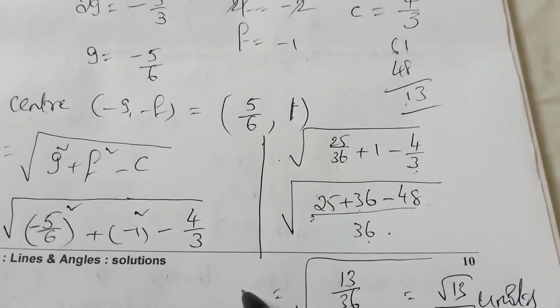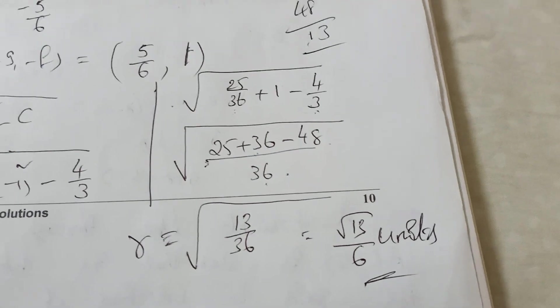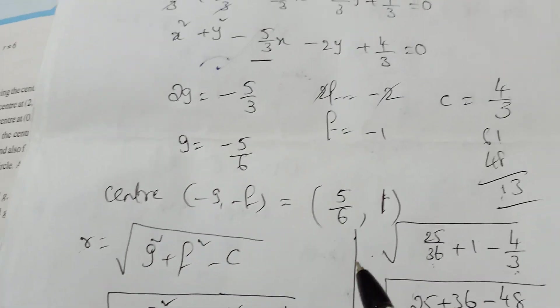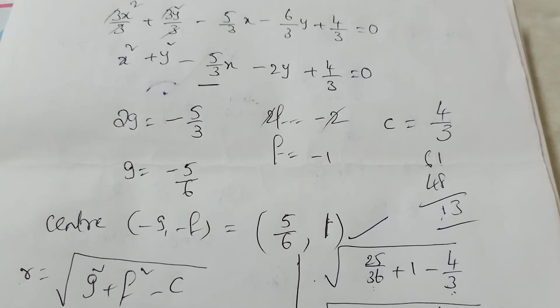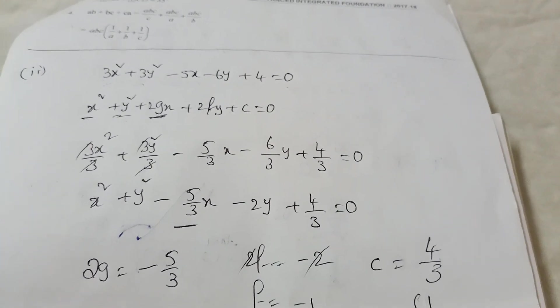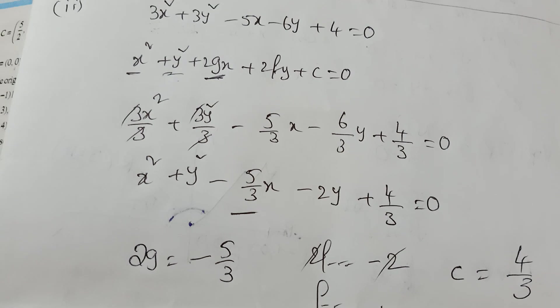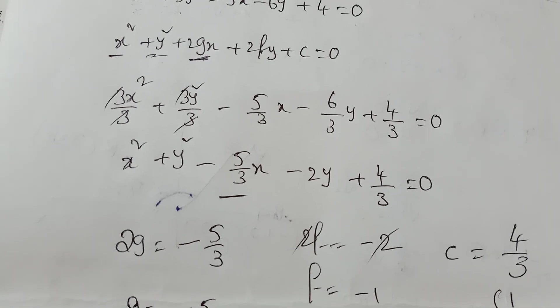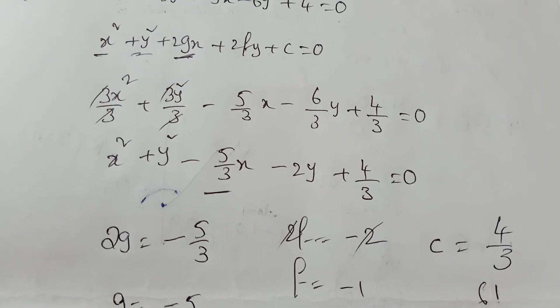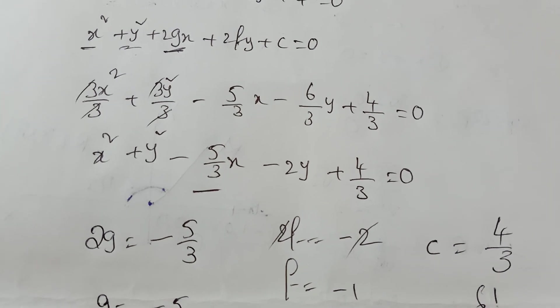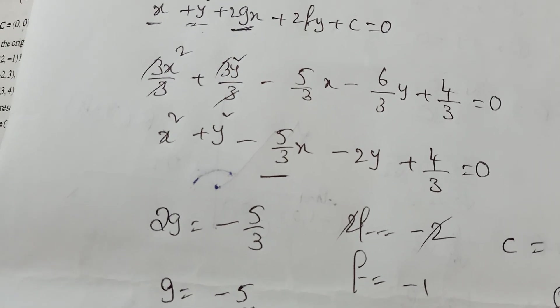So center is 5 by 6 comma 1 and radius is root 13 by 6. That is how to find the center and radius when the equation is given. In the next video we will continue with finding the equation when points are given. Please keep watching, like this video, and share with your friends. Thank you for watching!